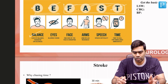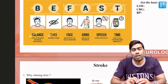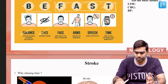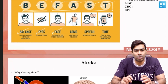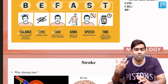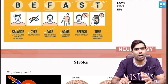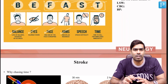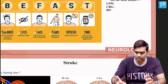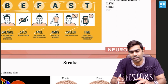So what is BE-FAST? B stands for balance issues — loss of balance, headache, or dizziness. E stands for eye problems — blurring of vision or double vision such as diplopia. F stands for facial weakness — facial asymmetry, deviation of the angle of the mouth, or drooping of the face to one side. A stands for arms and legs, where you can identify or demonstrate weakness. S stands for speech difficulty, which can be dysarthria or even aphasia.